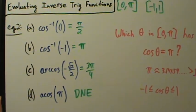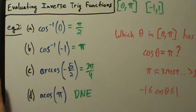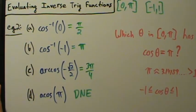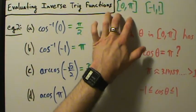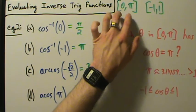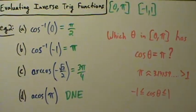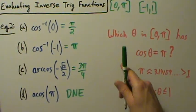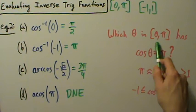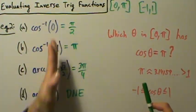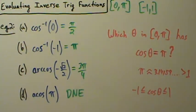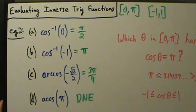That's it for example 2 with evaluating inverse trig functions. It's just a matter of knowing the unit circle and remembering the range of the inverse trig function — in this case, 0 to pi. We ask which angle theta in that interval has cosine of theta equal to our given number. Other trig functions are coming up in the next few videos.